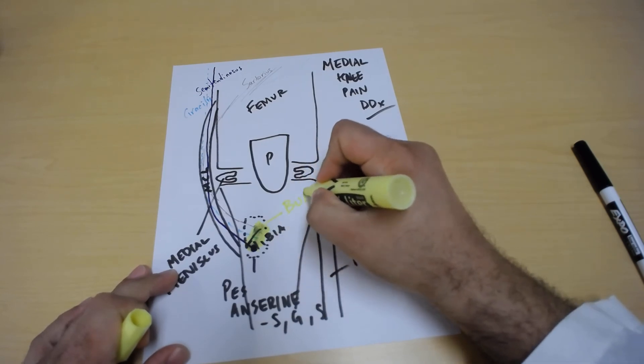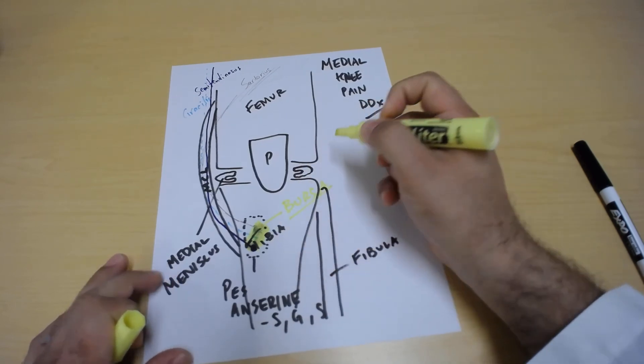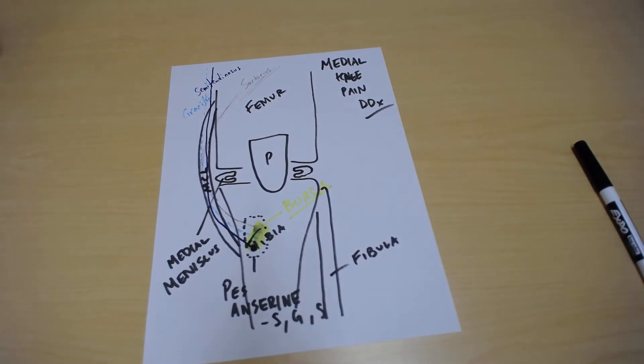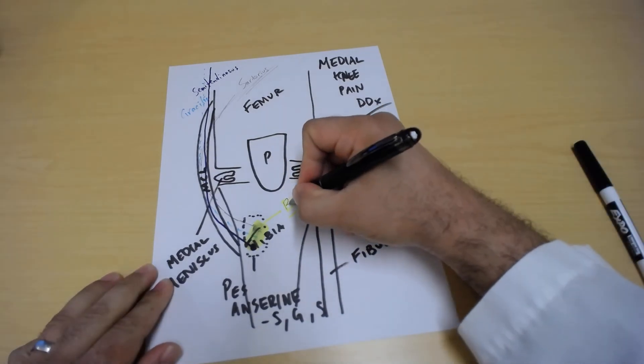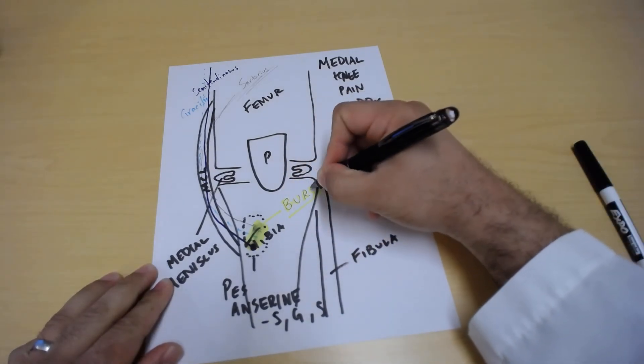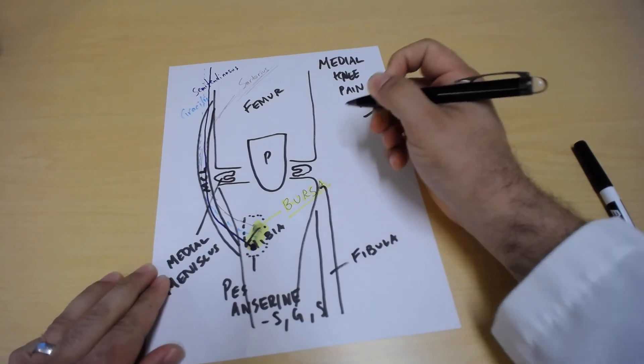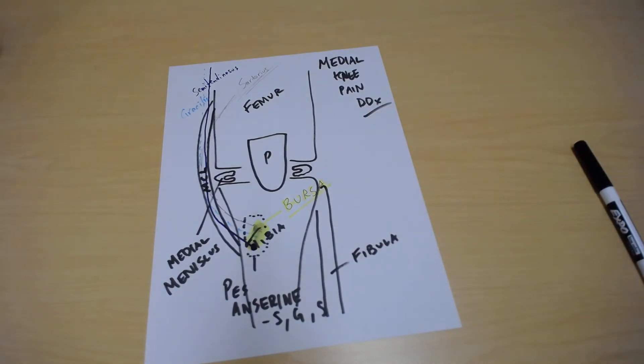The bursa is a cushion. As all those tendons come in, it allows the tendons to glide and slide without issue.